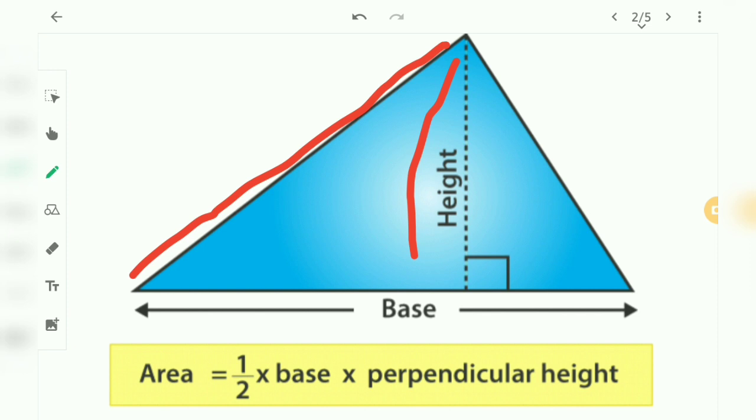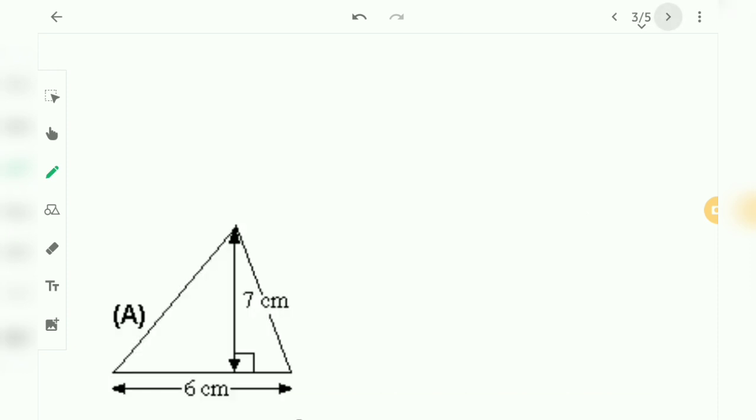Now we're going to solve some questions related to area of triangle. So the first question comes up here. That is, 6 is the base, 7 is the height, and we need to find the area of triangle.